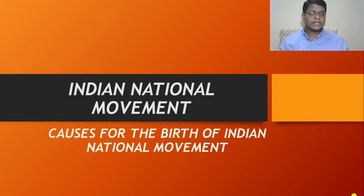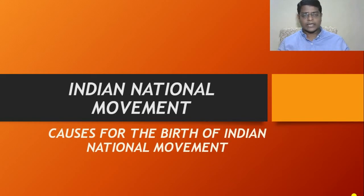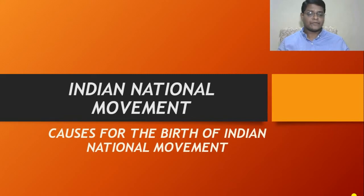Britishers came to India for the purpose of trade in the year 1600, December 31st. They established the East India Company for the purpose of trade, and gradually they occupied most of the Indian land from Kashmir to Kanyakumari, and established their administration in India. They ruled around 200 years in India. Against this British colonial rule or cruel rule, Indians made struggle for freedom in different forms. This entire struggle for freedom is known as the Indian national movement.